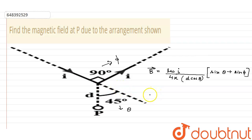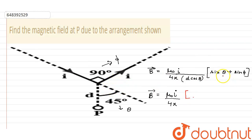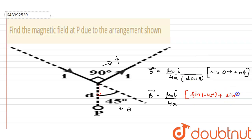Substituting the values: B = (μ₀ × I) / 4π, and then we handle sinθ. Since θ = 45° but is in the downward direction — opposite to the y-axis — it is negative. So we write sin(−45°). For φ, since it is 90°, sinφ = sin(90°), giving us sin(−45°) + sin(90°).